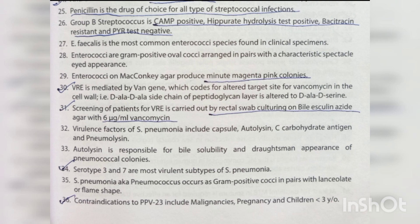Enterococci on MacConkey agar produce minute magenta/pink colonies. VRE is mediated by the van gene, which codes for an altered target site for vancomycin in the cell wall — the D-Ala-D-Ala side chain of the peptidoglycan layer is altered to D-Ala-D-Serine. Screening of patients for VRE is carried out by rectal swab cultured on bile-esculin azide agar with 6 µg/mL vancomycin.